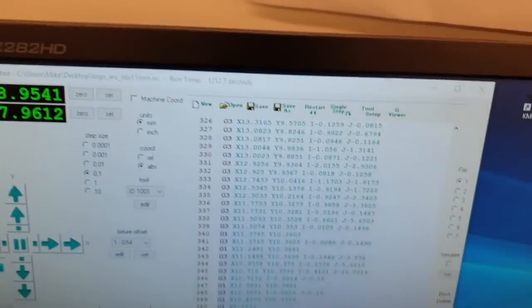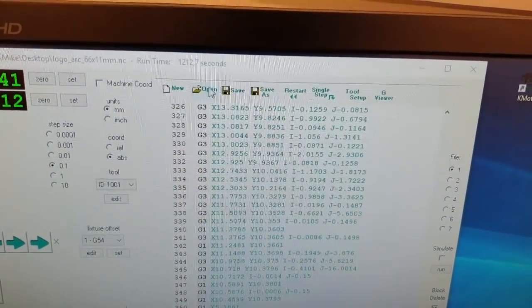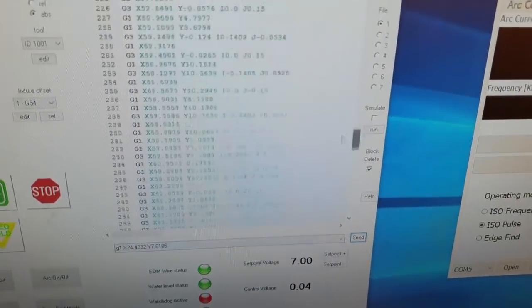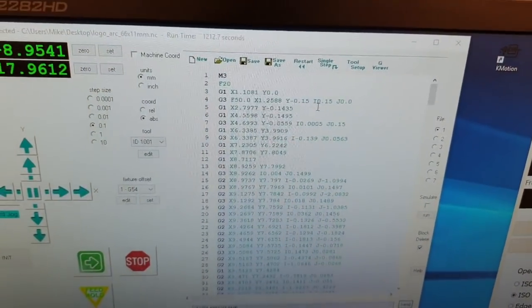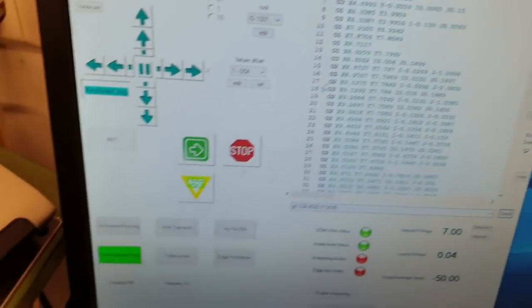So I have to wait until the tank is full. Then when the tank is full, first I load my g-code. So I can just say open, open file, and then it opens my g-code. At the moment the g-code is loaded for logo. So the g-code is loaded.